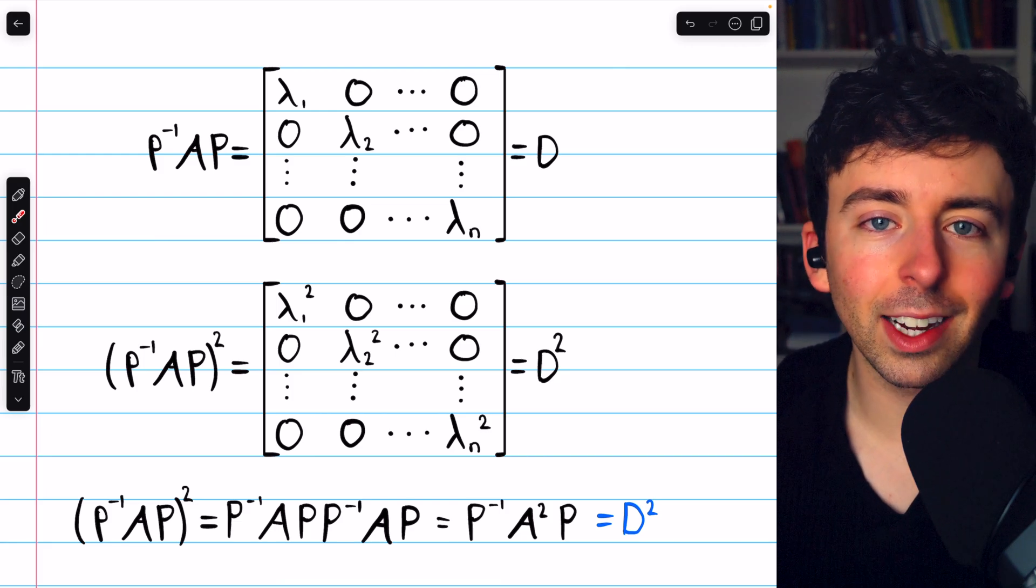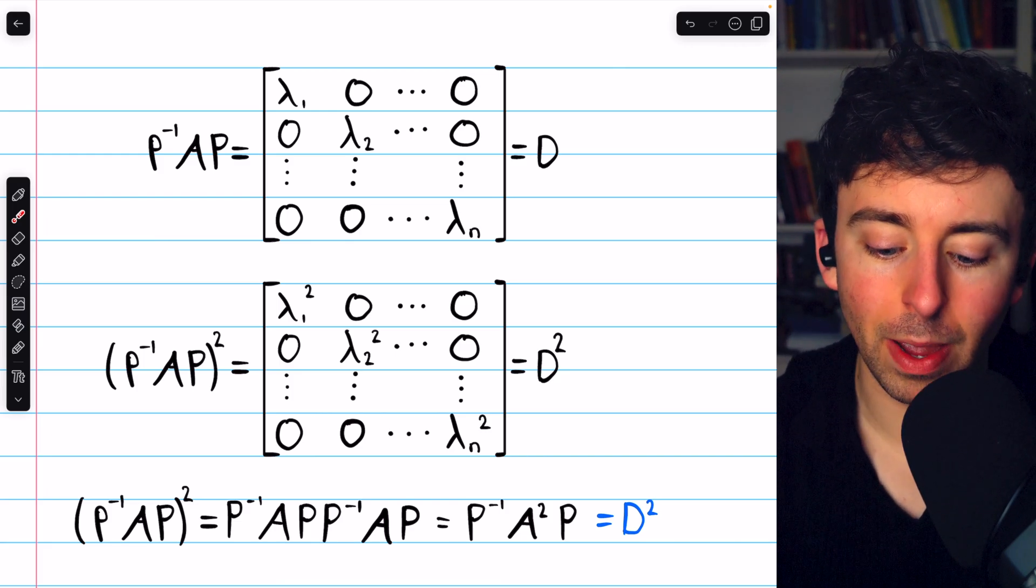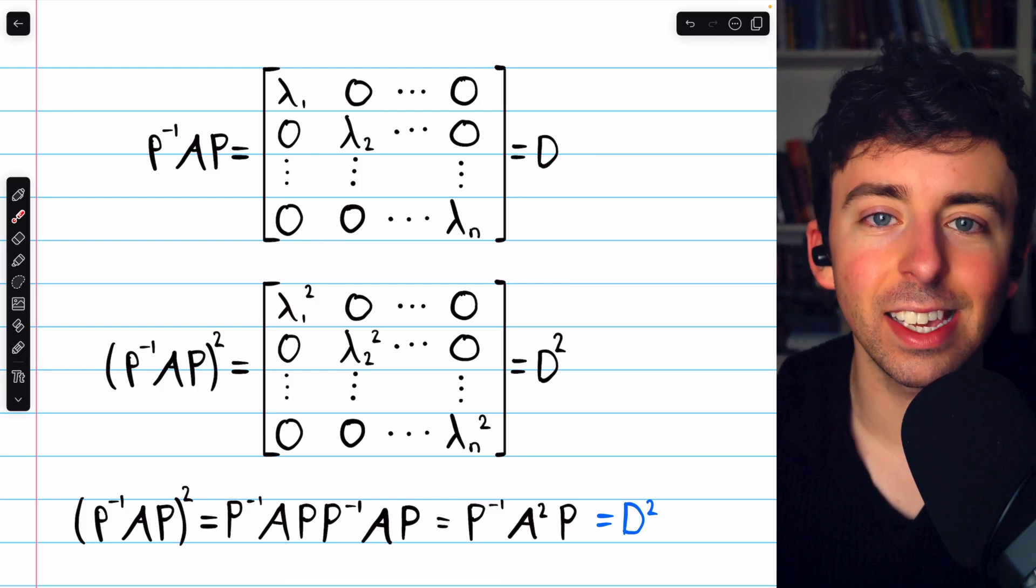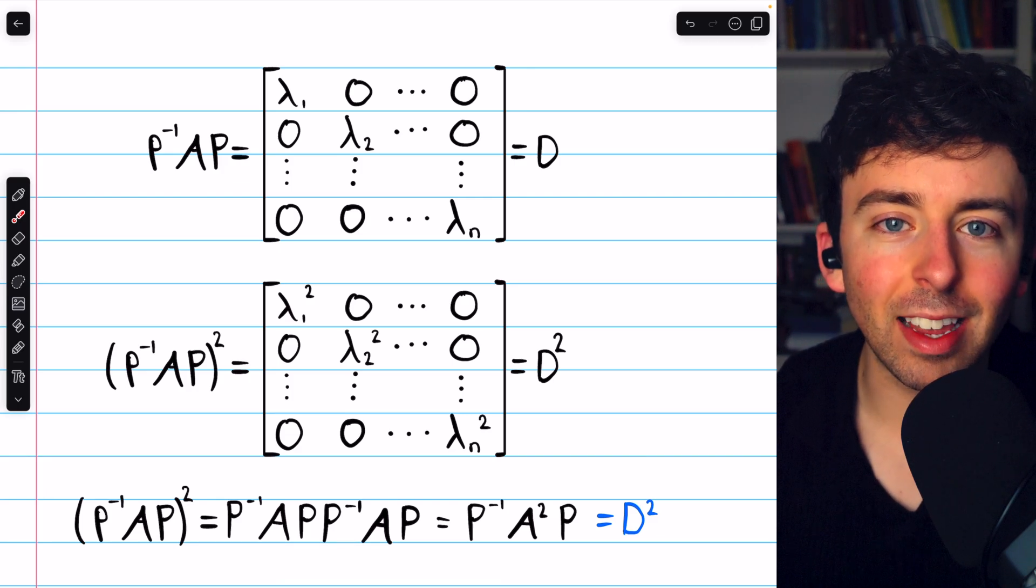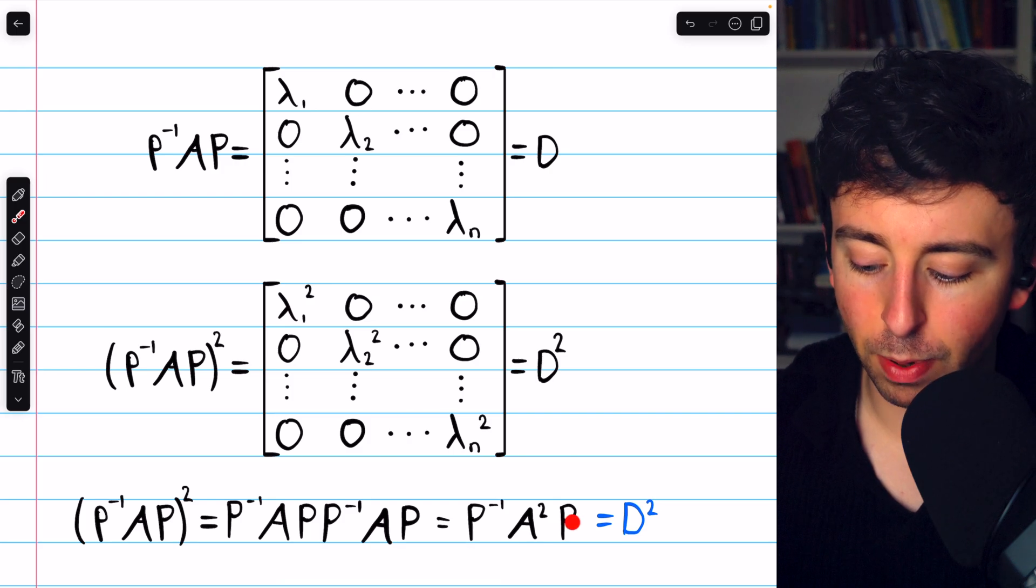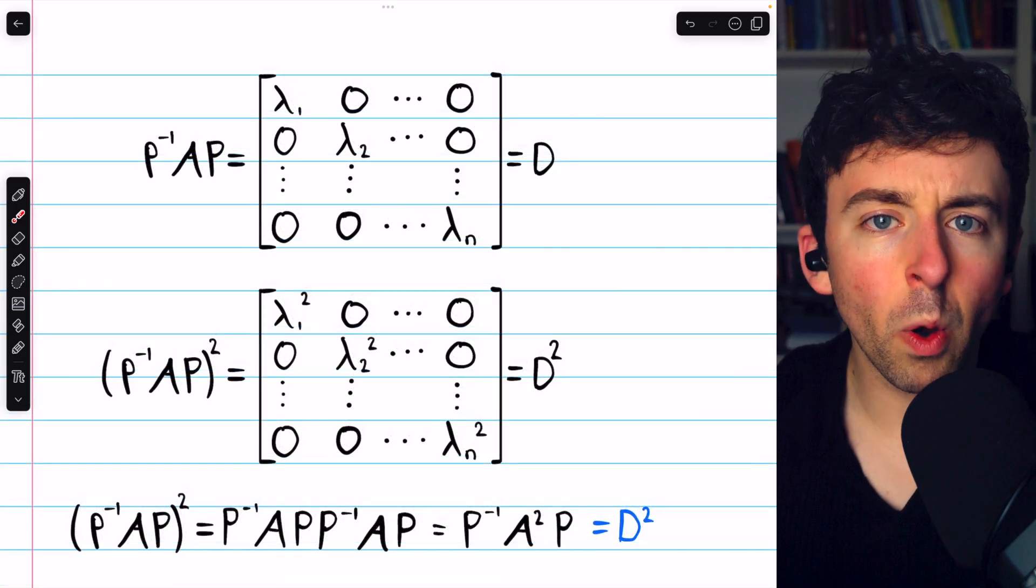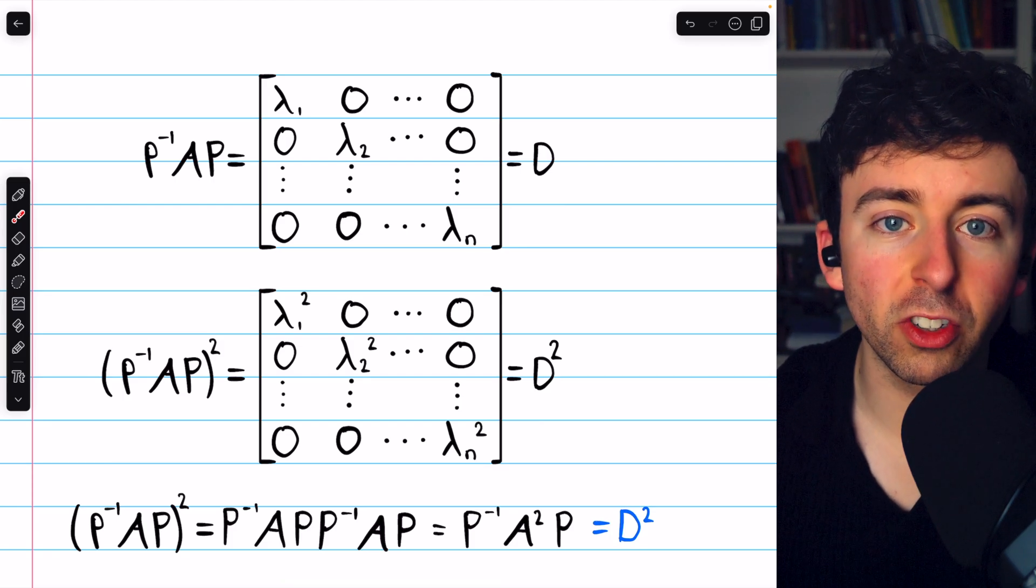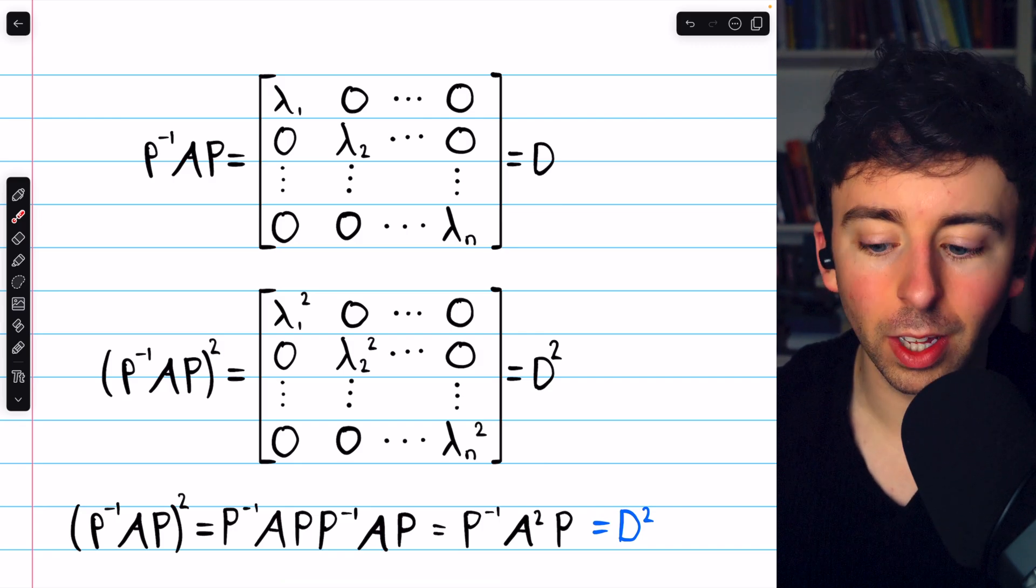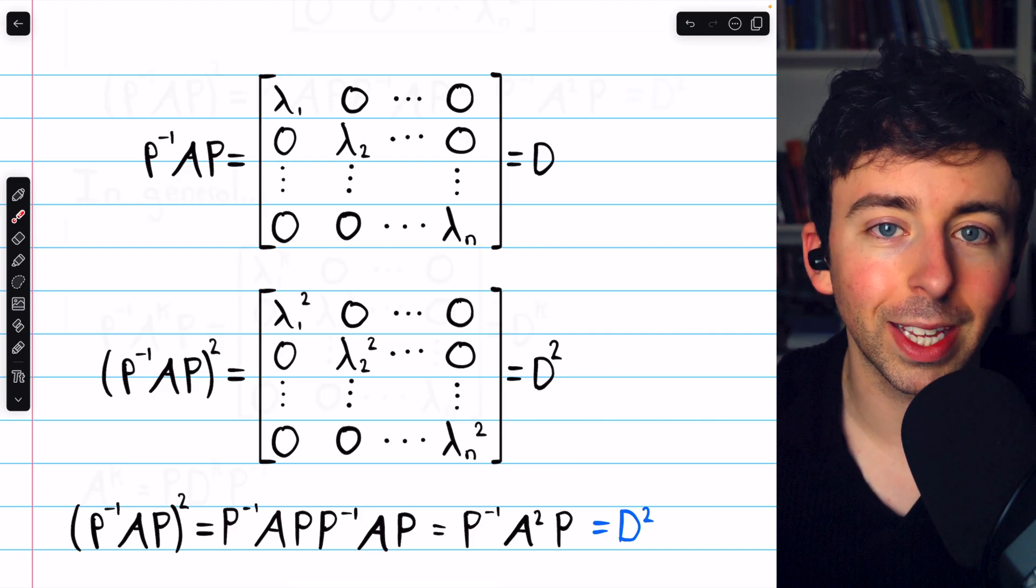So what we just saw is if we can diagonalize a matrix A, let's say the diagonalizing matrix is P, and once we diagonalize it, we call that result D, then D squared is actually just equal to A squared, but with that diagonalizing matrix P and its inverse multiplied on the right and left. So if I wanted to square A, I could just do the much easier thing of squaring D, the diagonal matrix it's similar to, and then just solving this equation for A squared, which would just require some matrix multiplication.